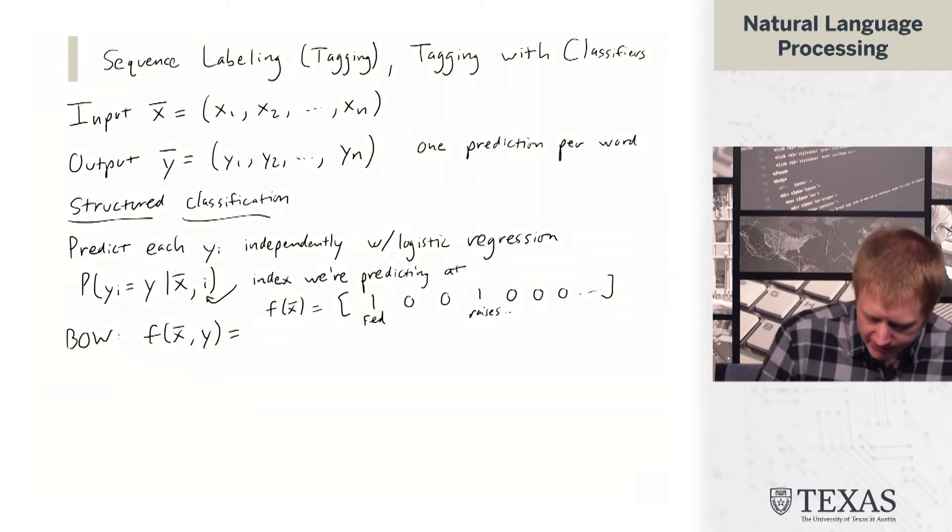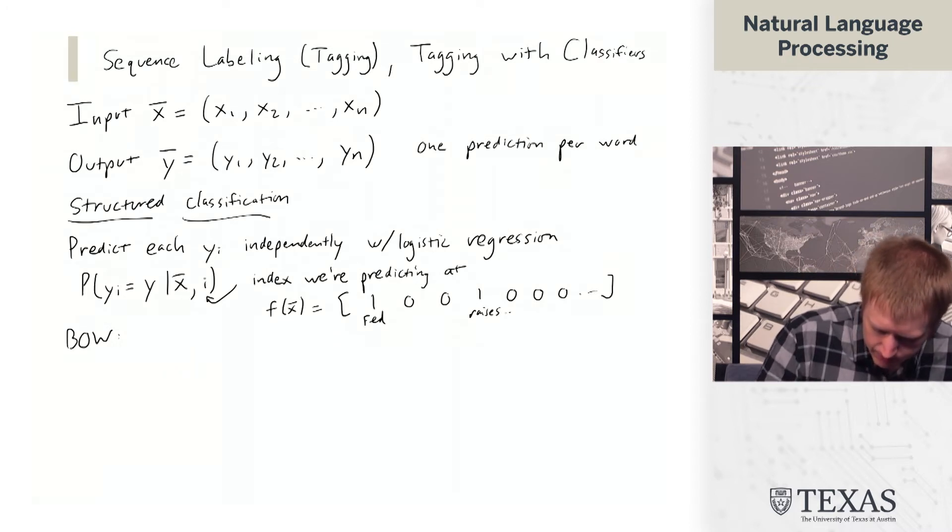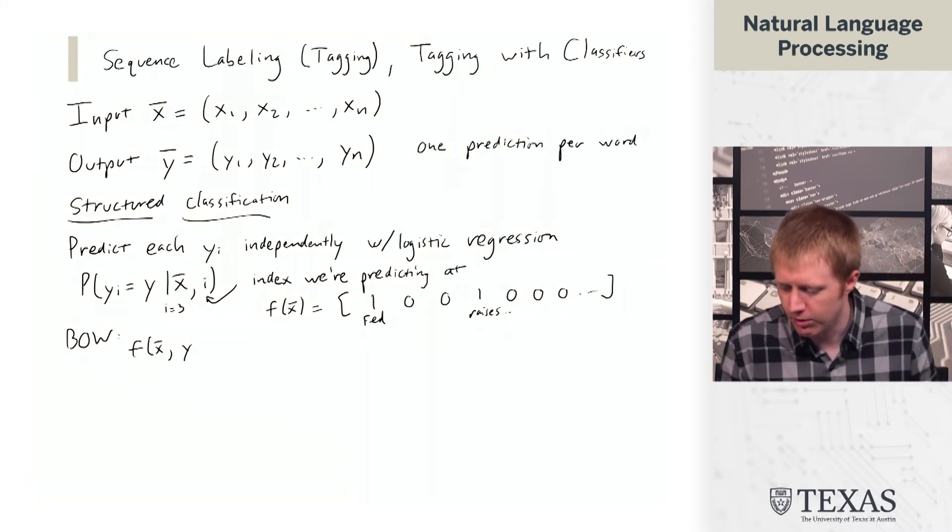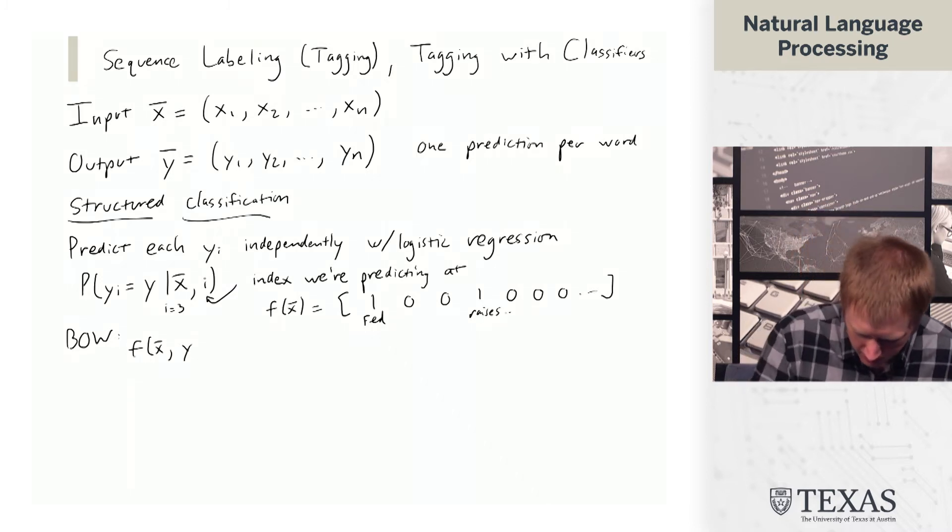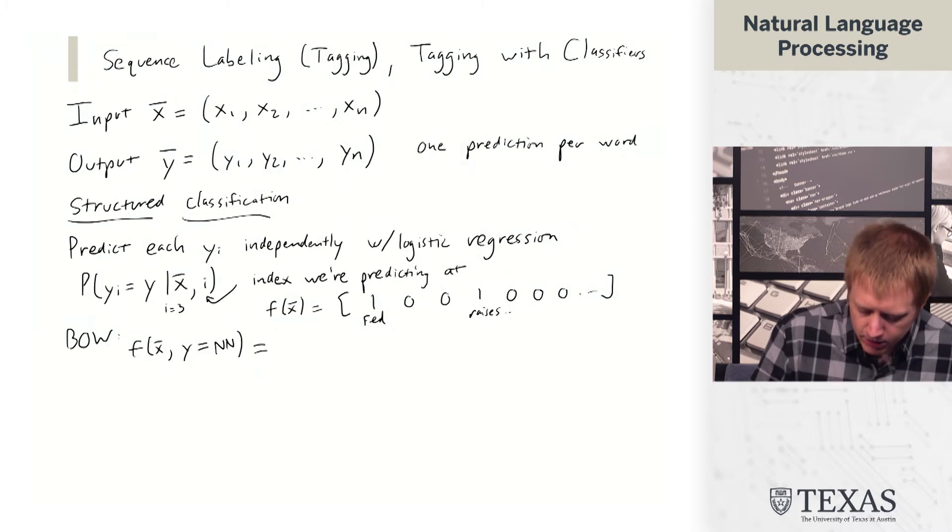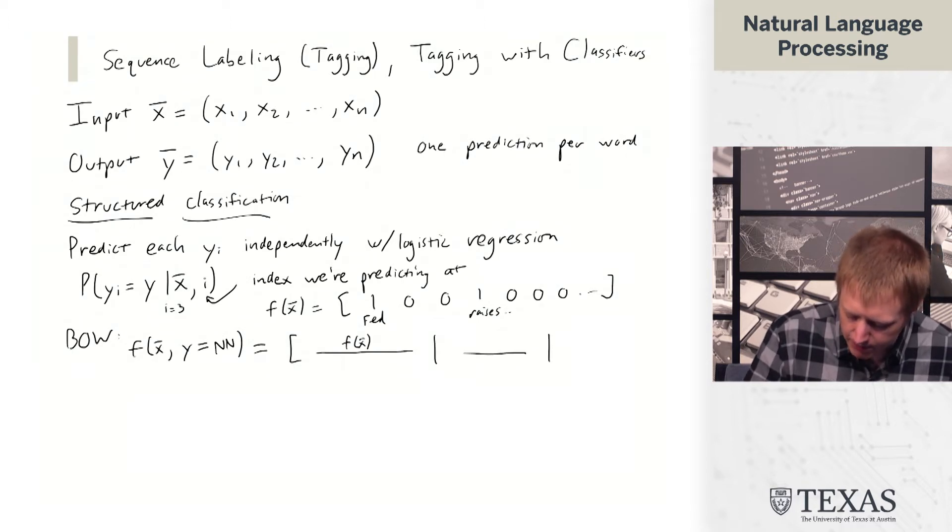So let's say we want to make this prediction here. We're going to think about i equals three. So we're going to think about making a prediction associated with the third word, and maybe the tag we're going to think about here is nn. Then what we get is this block-structured thing where we have this f of x vector, and we have a bunch of different copies of it, and we're going to get the ones associated with the nn tag, and then we're going to have zeros elsewhere.